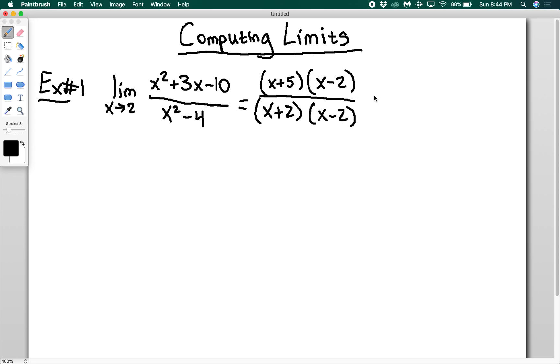When we did rational functions we always said make sure you don't cancel this out because then it's a different function. It looks the same but now the function has a value at x equals 2 instead of not. Here we're doing the limit. I don't care what the value of the function is at x equals 2.